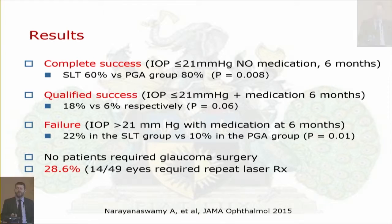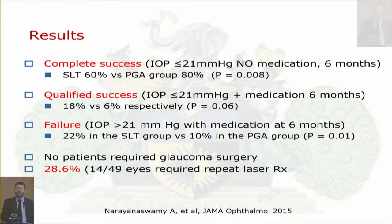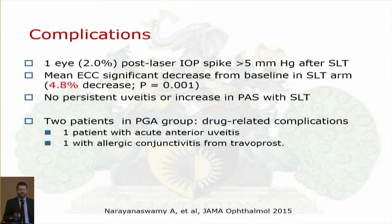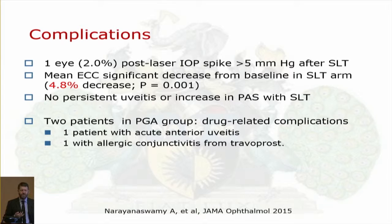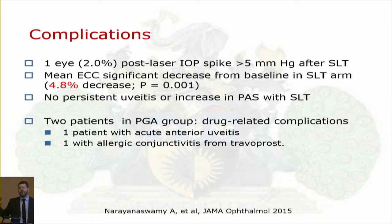Complete success rates were higher for prostaglandin analogues, and qualified success rates similarly so, but a significant number of patients did well in both groups. SLT is not as powerful as a prostaglandin, but certainly a valid treatment alternative in angle closure disease. There were very small numbers of pressure spikes — contrary to concerns that spikes might be higher in angle closure. Claims that SLT doesn't work in angle closure are clearly wrong, as this trial from Ongtin's group shows a significant response rate — not as high as in POAG, but valid.